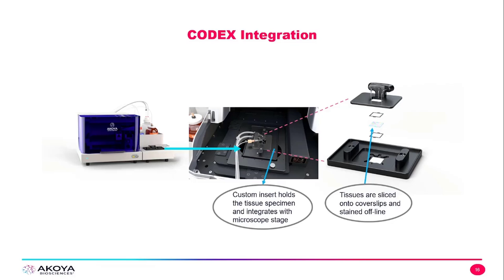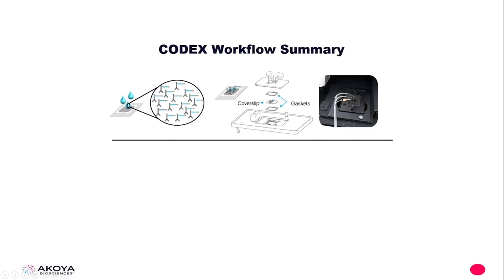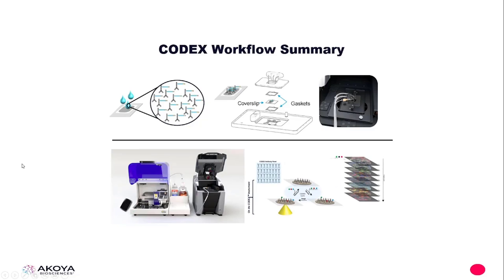Let's see the entire workflow in a single slide. We section our tissue and stain it with a cocktail of oligo barcoded antibodies. We then put our cover slip in a CODEX insert and place that on the microscope stage. The fluidic lines go to the CODEX insert, and all of the reveal, image, and repeat steps happen online while the insert is on the microscope stage. The only manual step in this whole process is really the staining of that cover slip — all other reveal, image, and remove steps are automated by CODEX fluidics and the microscope automation.